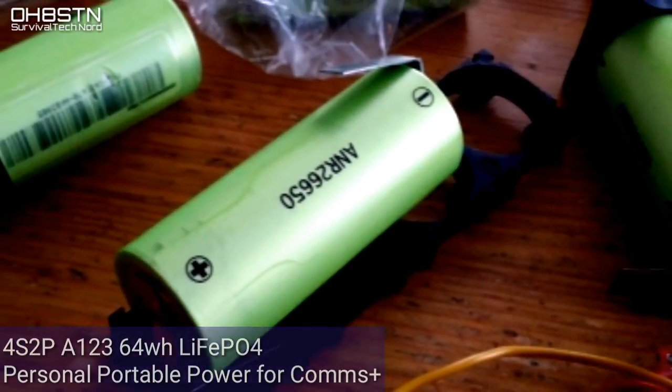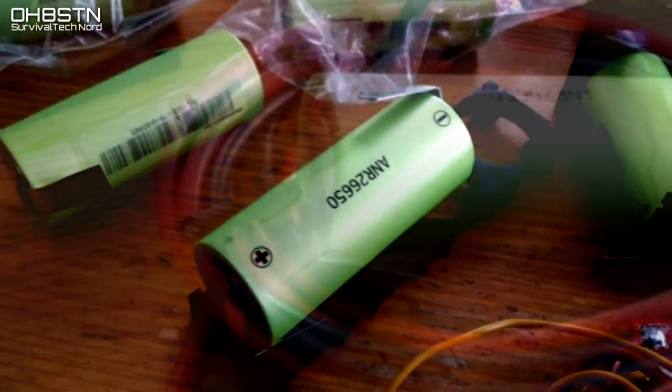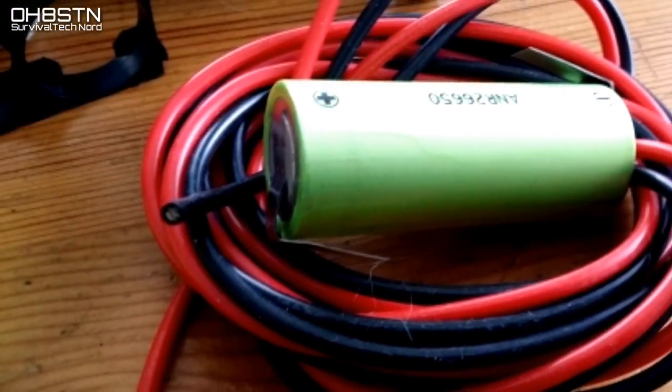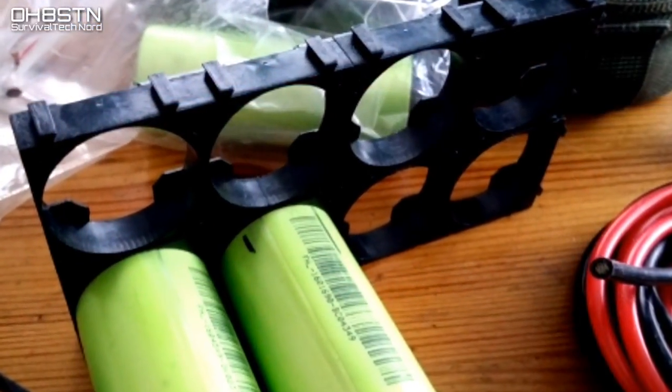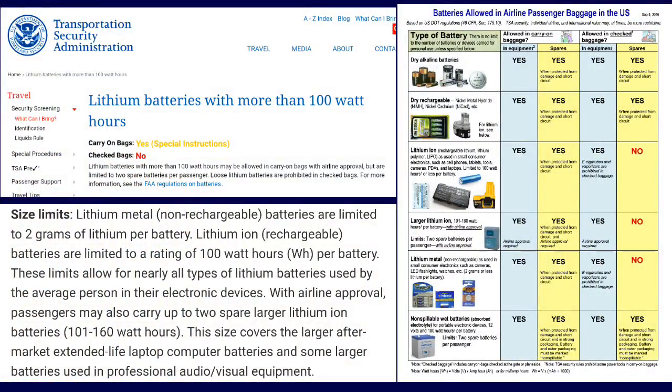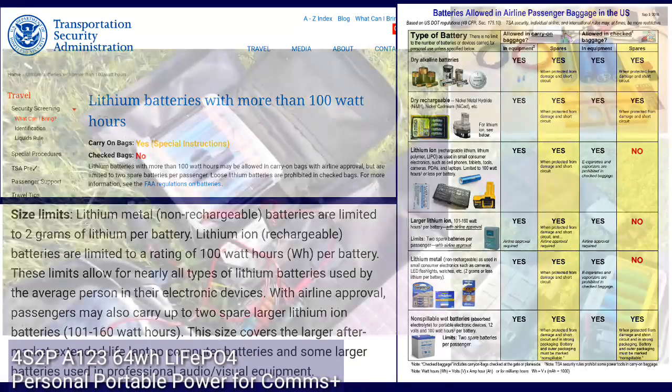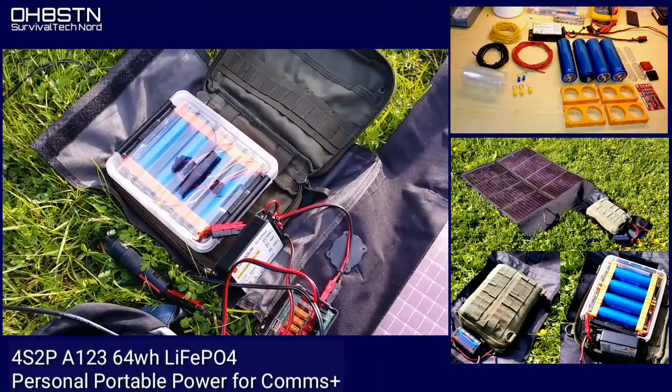This time the pack's a little bit smaller - it's 5 amps or 5,000 milliamps, and that's going to give us 64 watt hours at 12.8 volts. For those of you looking for portable power that's TSA or airline friendly, this is definitely the one for you as it falls under the 100 watt hour limitation.